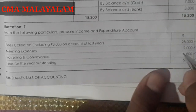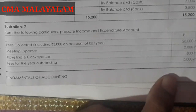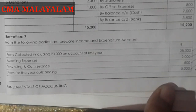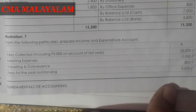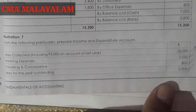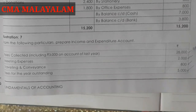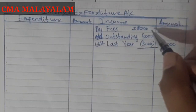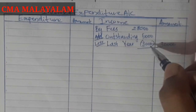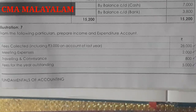First, fee collector including 3,000 — we adjust the fee for the year which is outstanding. I will give you a link in the description for additional reference. We will add the figures. The meeting expenses and traveling and conveyance go to the expense side.